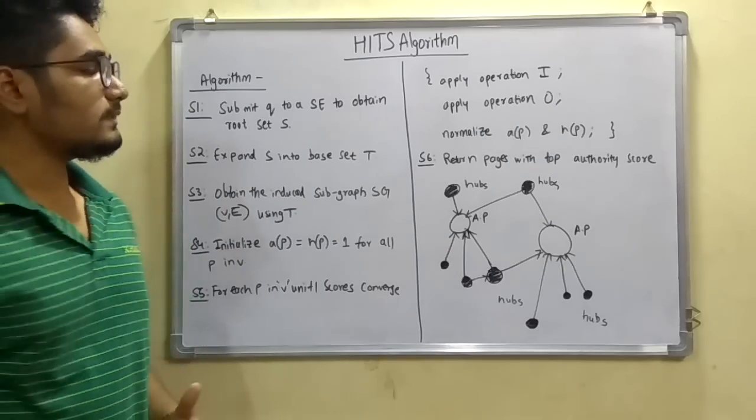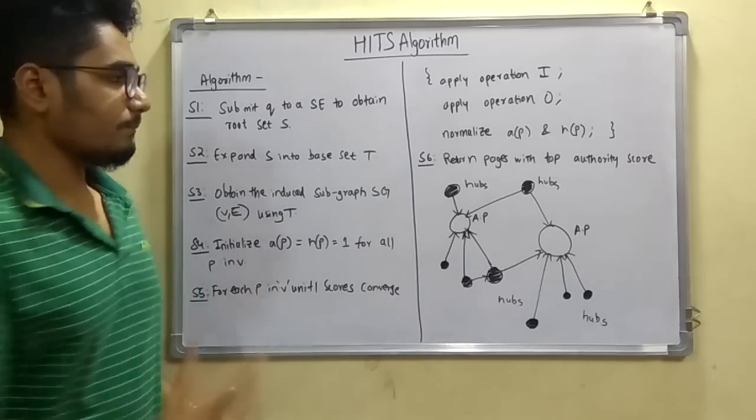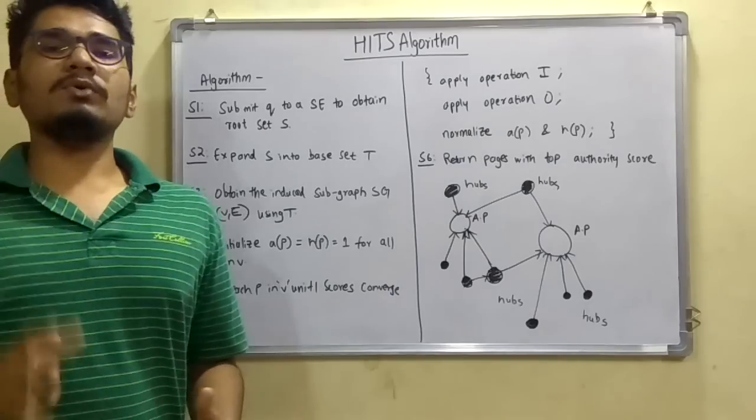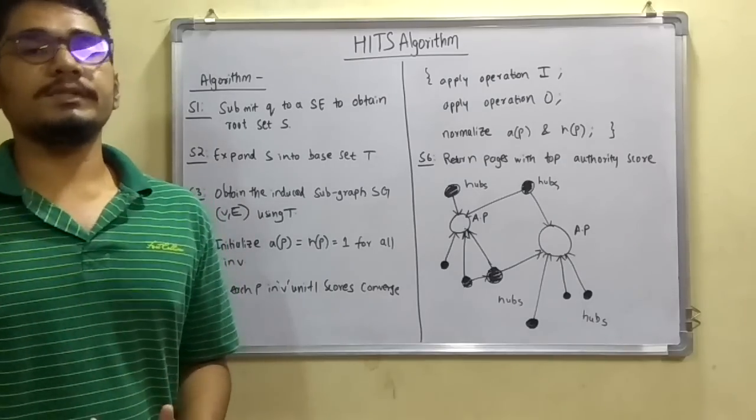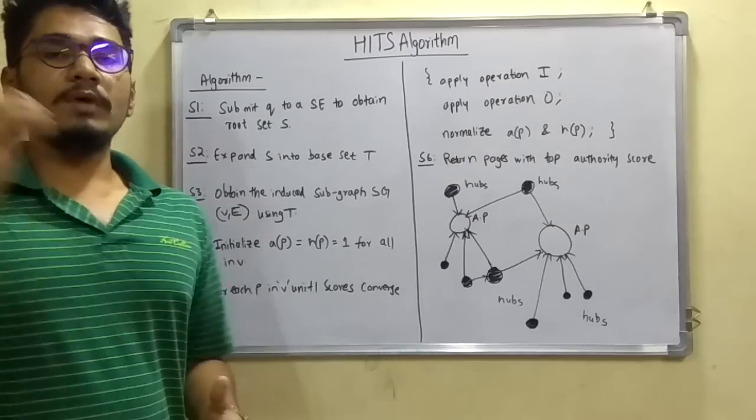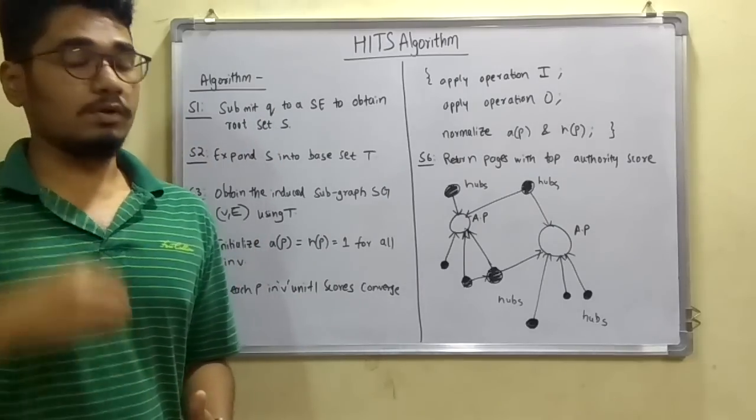Next, the final step is that you return the pages with the top authority score. Means the most important thing in this page rank computation or the HITS algorithm, you actually see the authority score not the hub score.